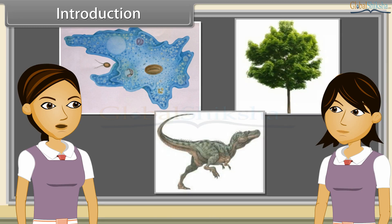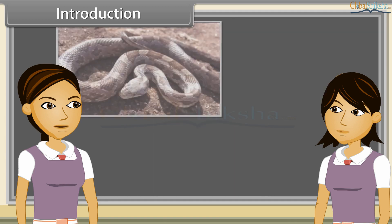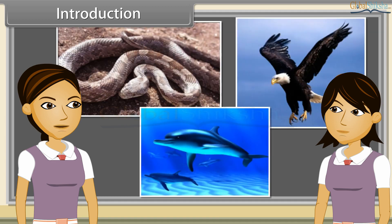Name these organisms as well. The first one is a tree and the second a dinosaur. Identify these creatures: snake, eagle and dolphins.